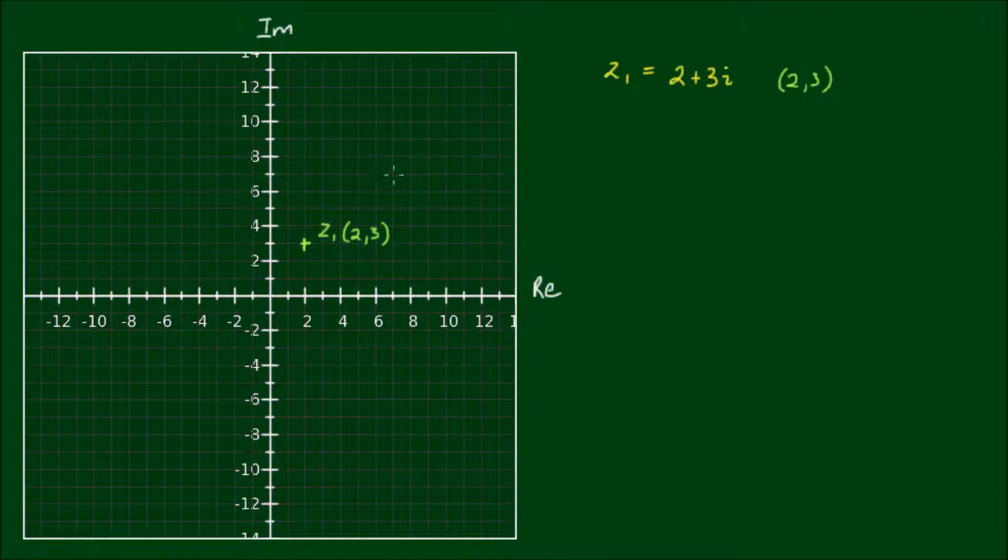But I believe that complex numbers are actually better represented as vectors. So we can draw a vector from the origin to the coordinate of the complex number. And I'll show you why it's very effective to represent complex numbers as vectors in just a moment.